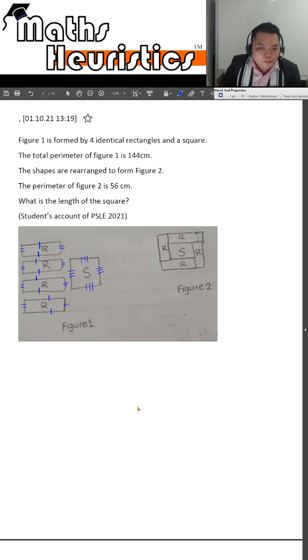For figure 2, what is the parameter? The parameter is the outline, the outline's length. So it's formed by one rectangular length, one rectangular breadth on each side.